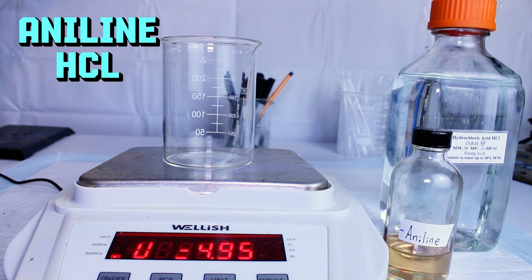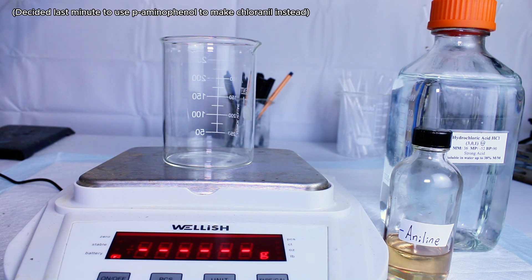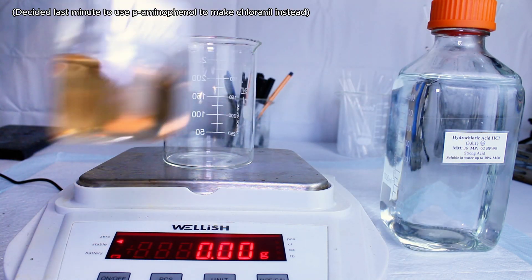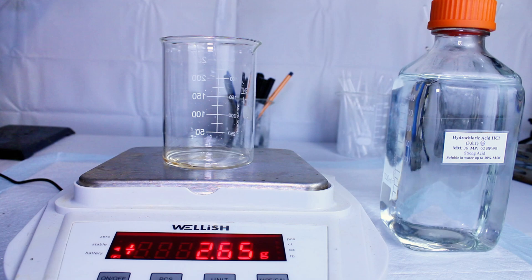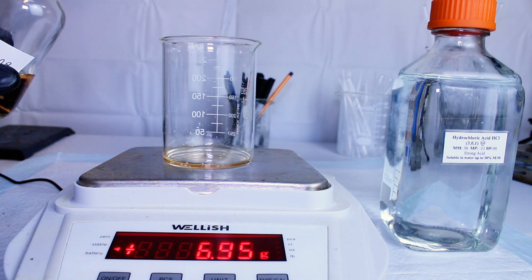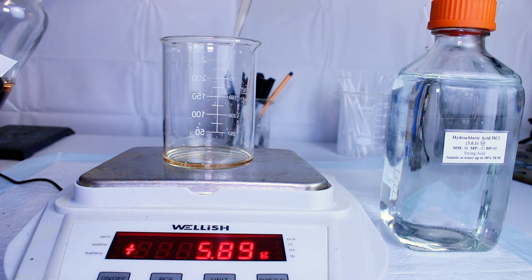Today I'm going to make the chemical aniline hydrochloride, which I plan to use later to synthesize chloranil. Chloranil can then be condensed with more aniline to yield the synthetic organic pigment dioxane violet, which has been on my radar for a while now.